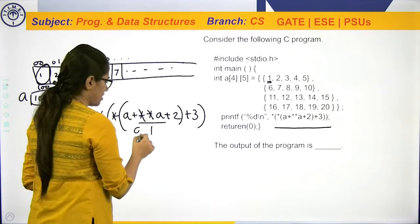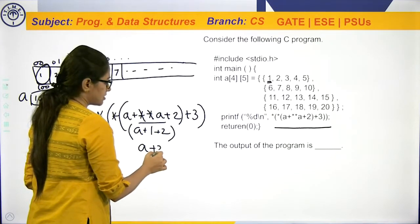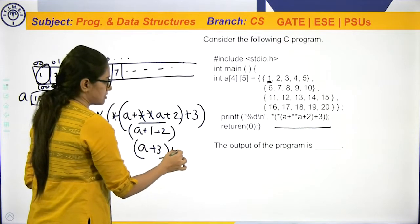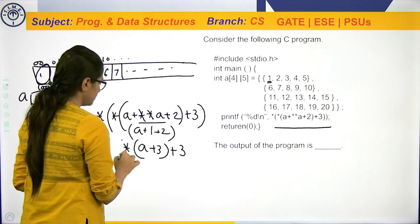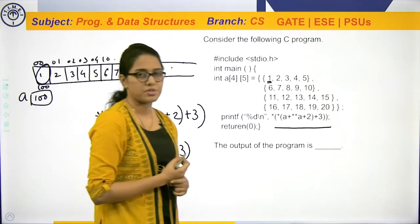So, A plus 1 plus 2. That is nothing but A plus 3 plus 3. So, this is the final expression.